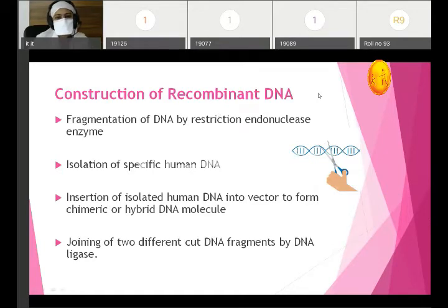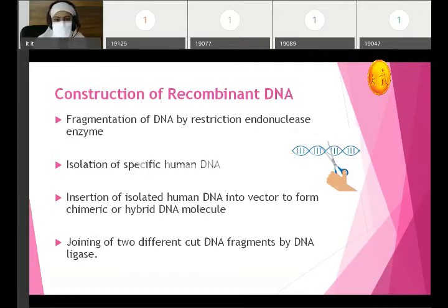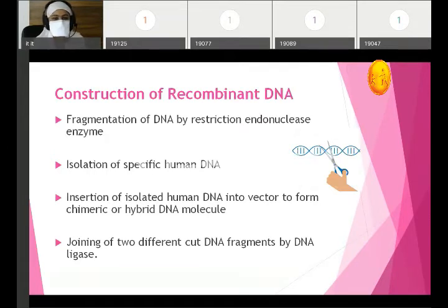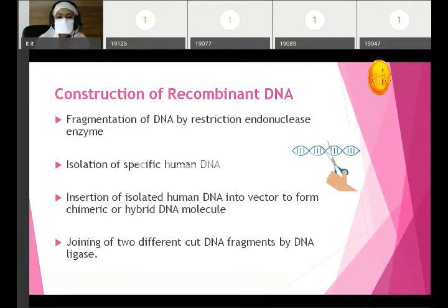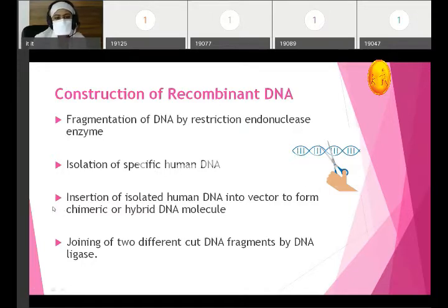There are four steps in the formation of recombinant DNA. First step is fragmentation of DNA by restriction endonuclease enzyme. Second step is isolation of specific human DNA. Third step is insertion of isolated human DNA into a vector to form a chimeric or hybrid DNA molecule. From the second step we get the isolated human DNA and insert it into a vector.